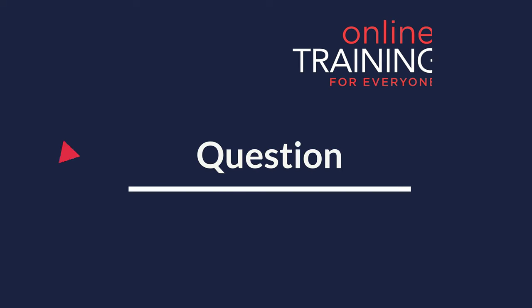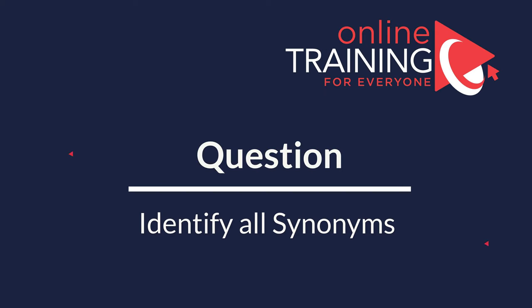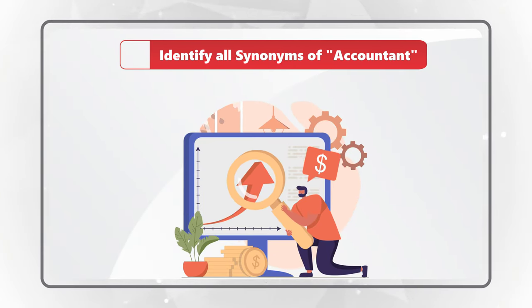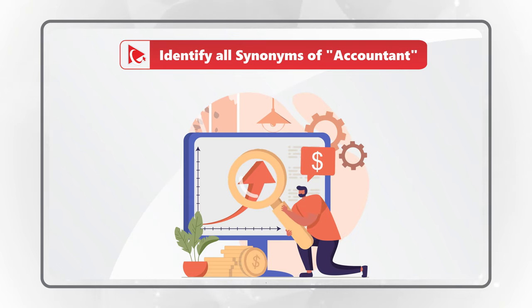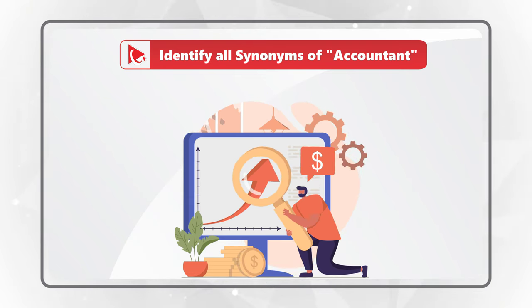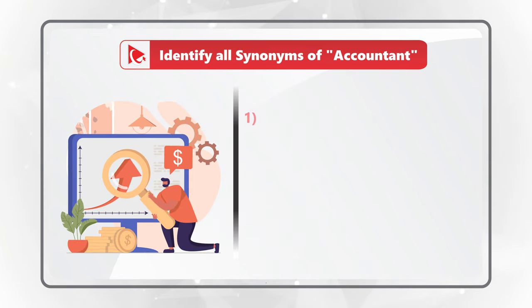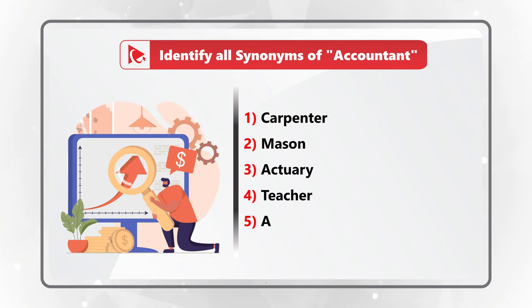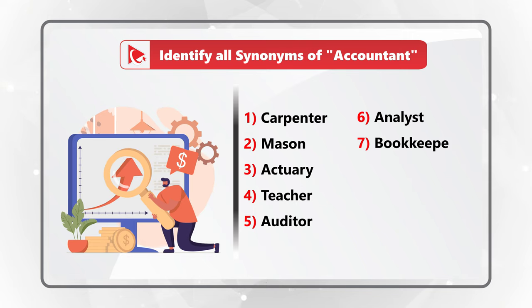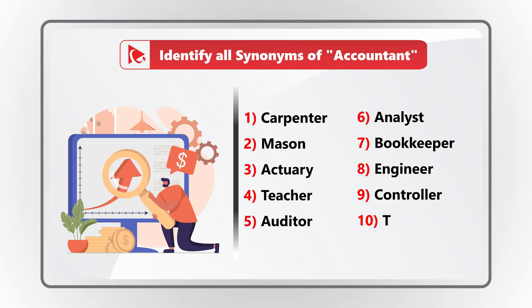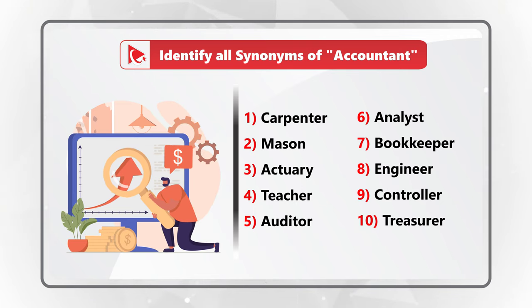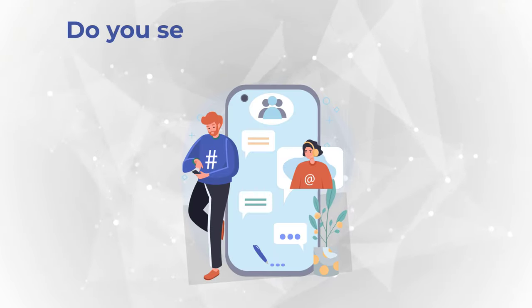I love this question because it seems simple, but it allows you to show all your brain power. Instead of answering it for you, I'd like you to show off and practice your skills. You're presented with 10 words, and you need to identify all synonyms to the word accountant. The 10 words are: carpenter, mason, actuary, teacher, auditor, analyst, bookkeeper, engineer, controller, and treasurer. There could be between 1 and 10 answers — give yourself a little bit of time and post your answer in comments.